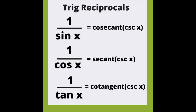1 over sine is cosecant, 1 over cosine is secant, 1 over tan is cotangent.